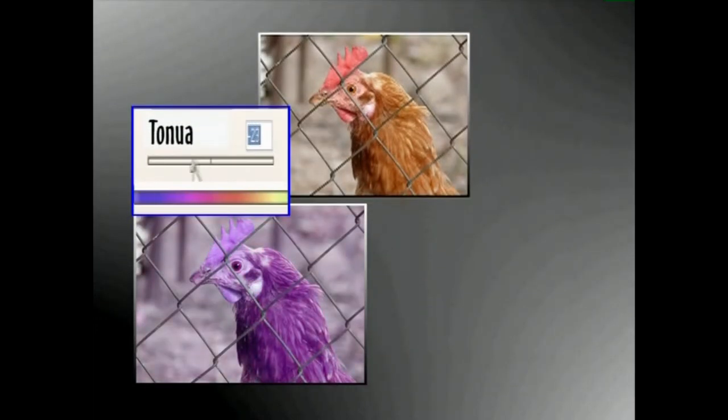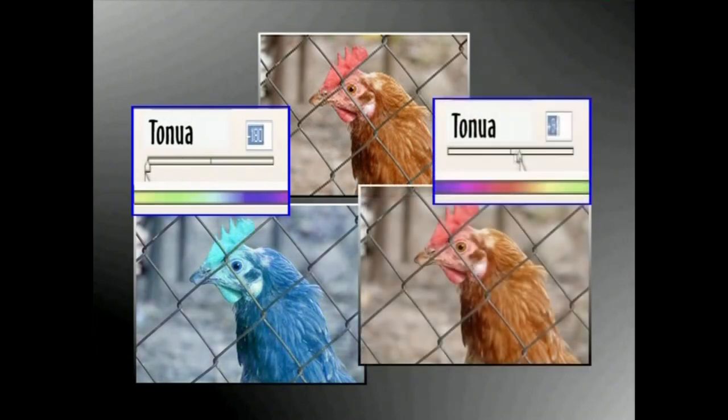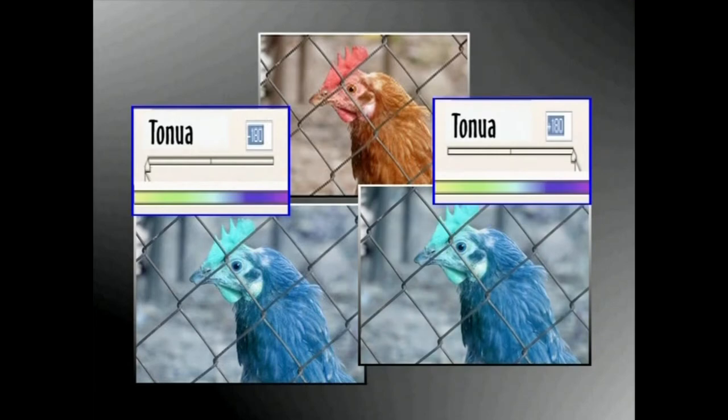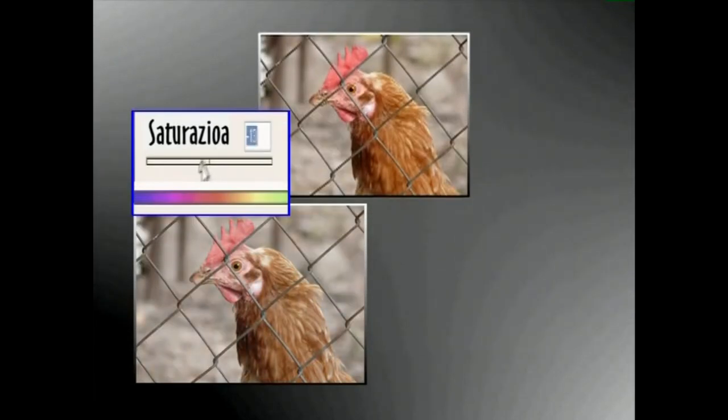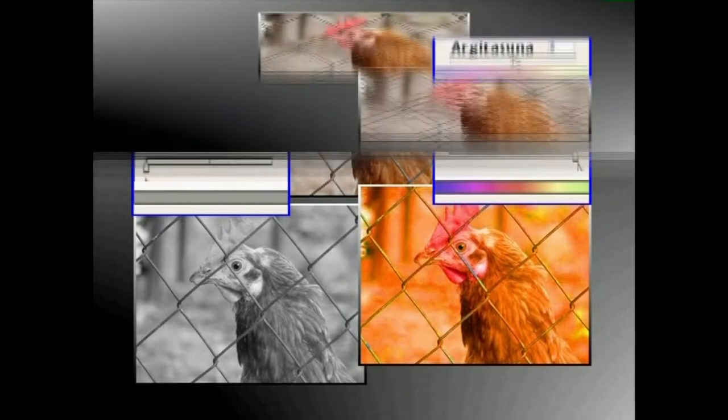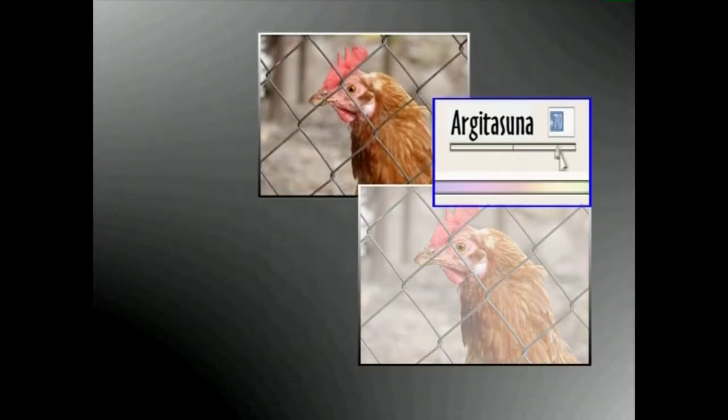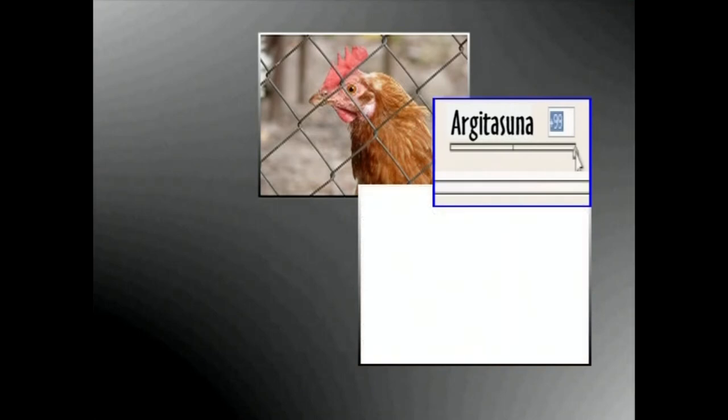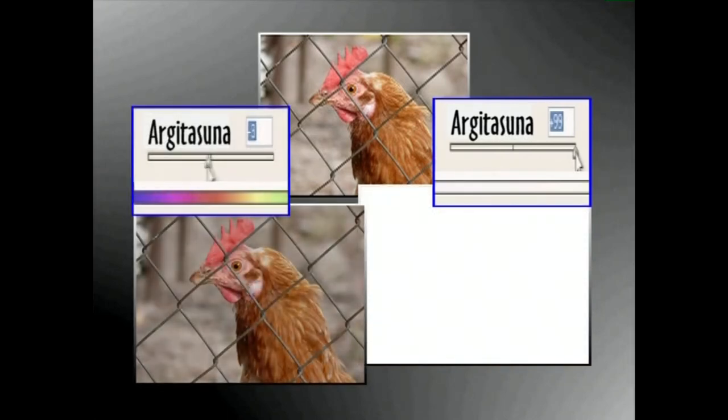Tonu izeneko tresna irudi baten koloreak aldatzeko erabiliko dugu. Saturazio deituriko tresna irudi baten koloreen intentzitatea haunditzeko edo txikitseko erabiliko dugu. Argitasuna tresnaren bitartez irudiaren kolorei zuria edo beltza gehitua alizango diegu.